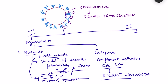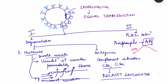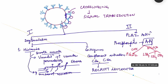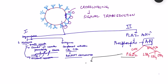The second major component: cross-linking and signal transduction activate phospholipase A2, which converts membrane phospholipids of the mast cell to arachidonic acid. Different enzymes then act on arachidonic acid — cyclooxygenase and 5-lipoxygenase — producing different mediators. In the COX pathway the major mediator is prostaglandin D2, and in the lipoxygenase pathway the major mediators are LTB4, LTC4, and LTD4.